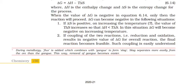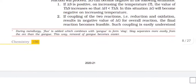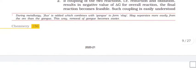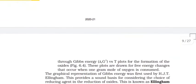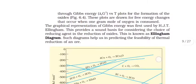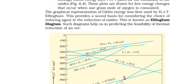ΔG becomes negative in following situations. If ΔS is positive, on increasing temperature T the value of TΔS increases. So ΔH is less than TΔS. In this situation ΔG will become negative. If coupling of two reactions, that is reduction and oxidation, results in negative value of ΔG for overall reaction then the reaction becomes feasible. Such coupling is easily understood through Gibbs energy versus T plot for the formation of oxides.